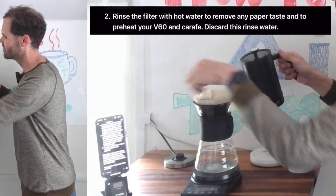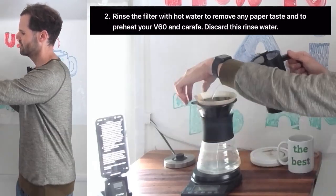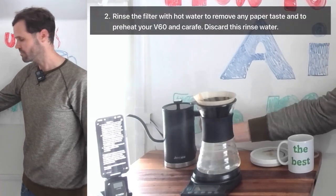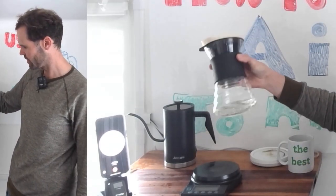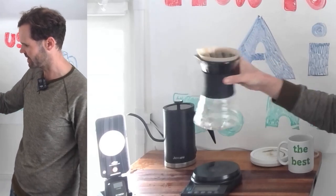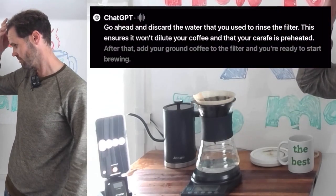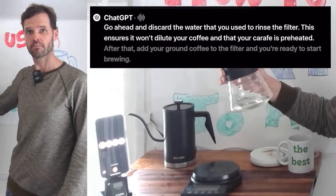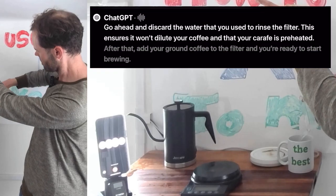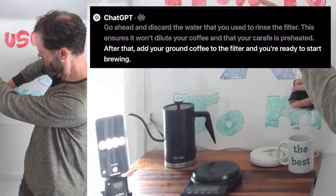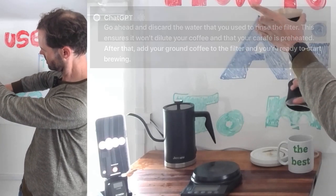Two, rinse the filter with hot water to remove any paper taste and to preheat your V60 and carafe. Okay, I pre-wet the filter and now there's water at the bottom of my carafe. Go ahead and discard the water that you use to rinse the filter. This ensures it won't dilute your coffee and that your carafe is preheated. After that, add your ground coffee to the filter and you're ready to start brewing.